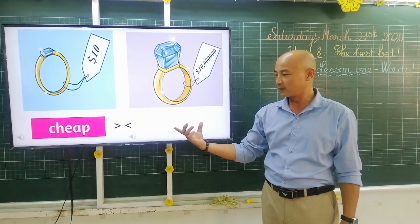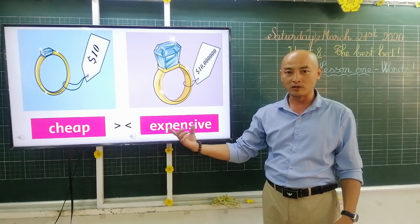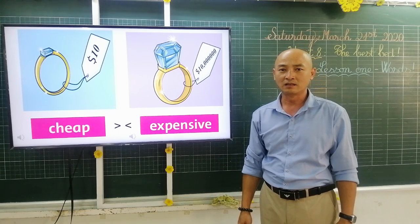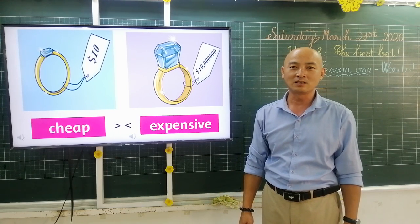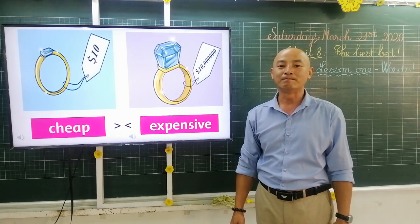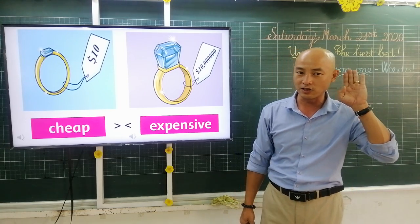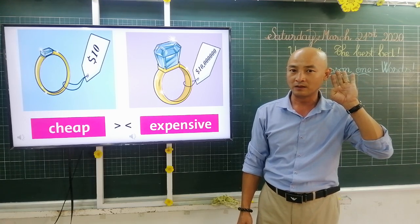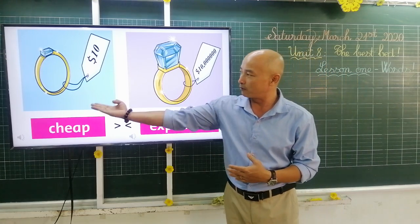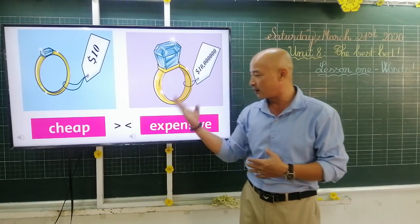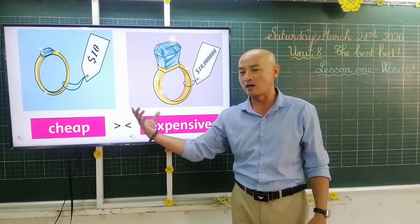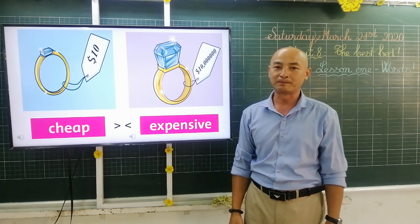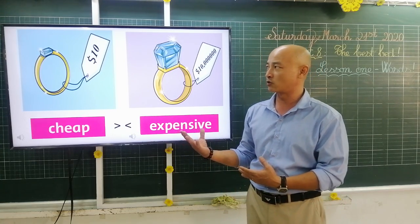Listen and repeat the word: expensive. Once more please: expensive. Now I would like you to repeat: expensive. That's good. So we have one thing that is cheap and another one that is expensive — they are opposite words. Try to remember.